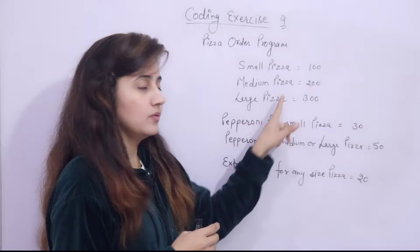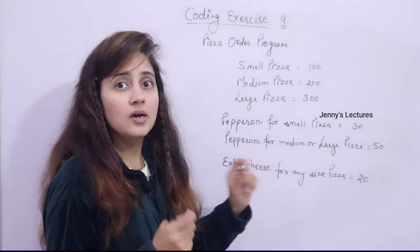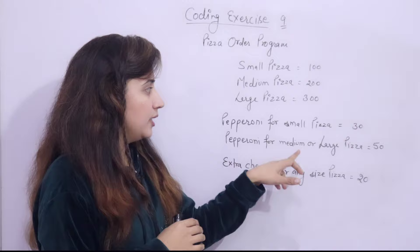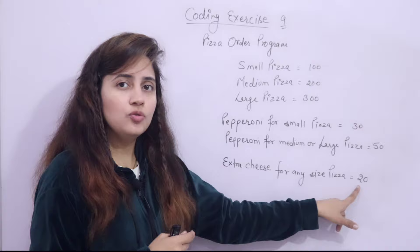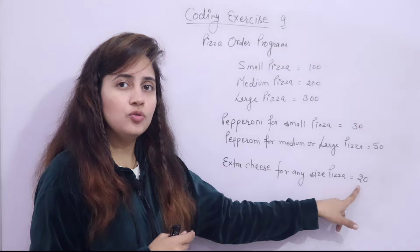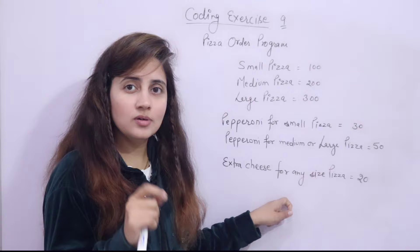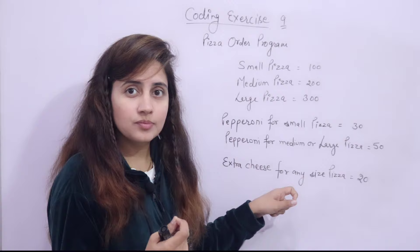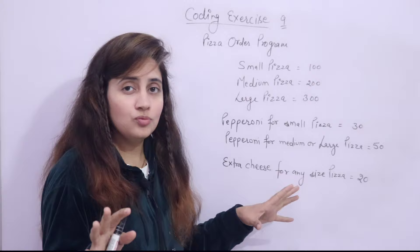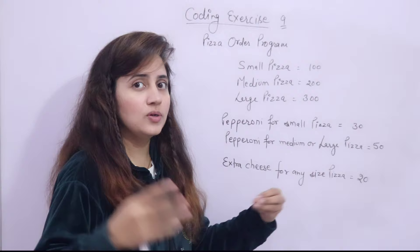Extra cheese for any size of pizza is 20 rupees. You need to ask the user what size pizza they want. Based on that, you add the base price, then ask if they want pepperoni — add 30 or 50 rupees based on size — then ask about extra cheese, add 20 if yes, and finally print the final bill. You need to use multiple if, nested if, else, and elif in this program. You can draw a flowchart first, then write the program.